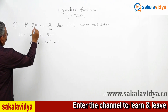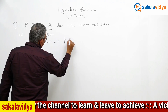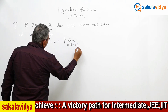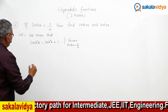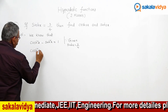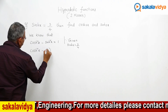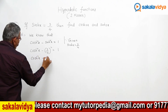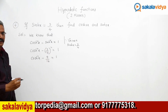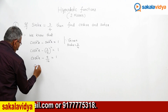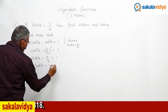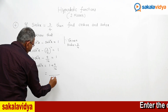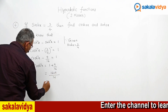Now, given here sinh(x) is equal to 3 by 4. Replace: cosh²(x) minus 9 by 16 equals 1. So cosh²(x) equals 1 plus 9 by 16. Taking 16 as the LCM, 16 plus 9 is 25, so cosh²(x) equals 25 by 16.